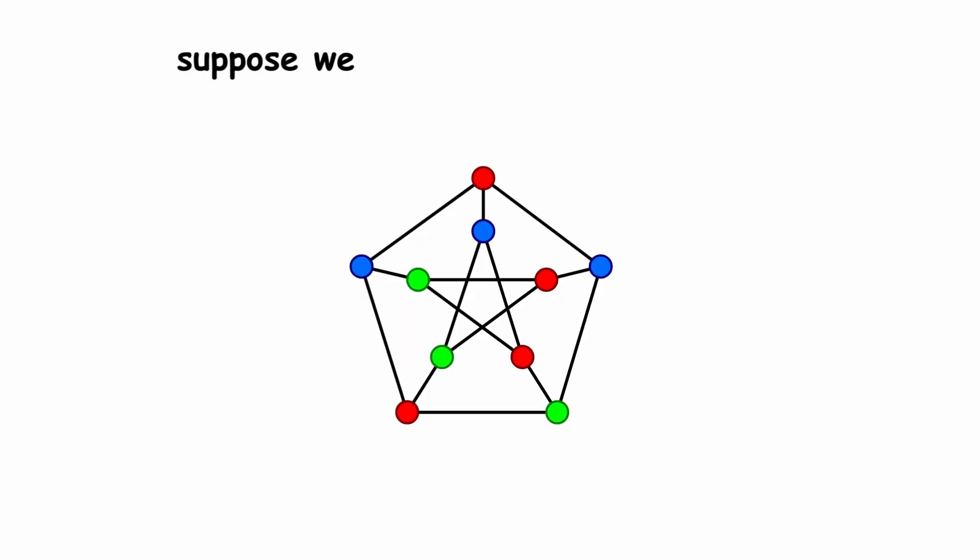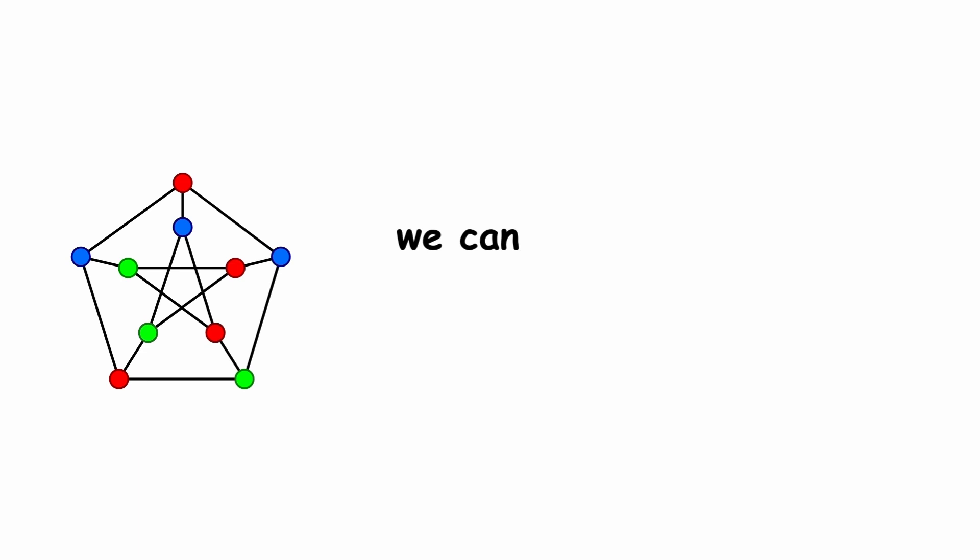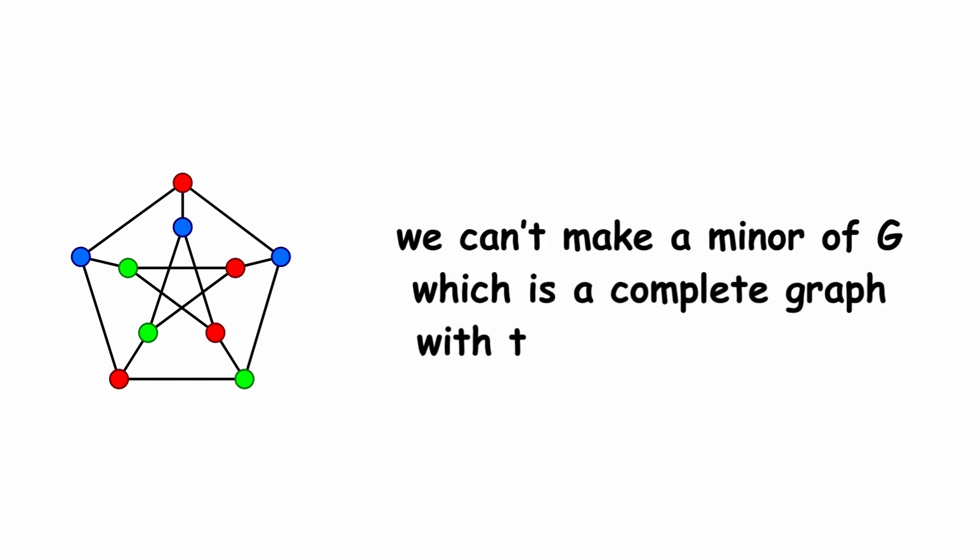Now, suppose we have some graph called g. Note that we're not allowing a loop, which is an edge that connects a vertex to itself. Now, suppose we can't make a minor of g, which is a complete graph with t vertices.